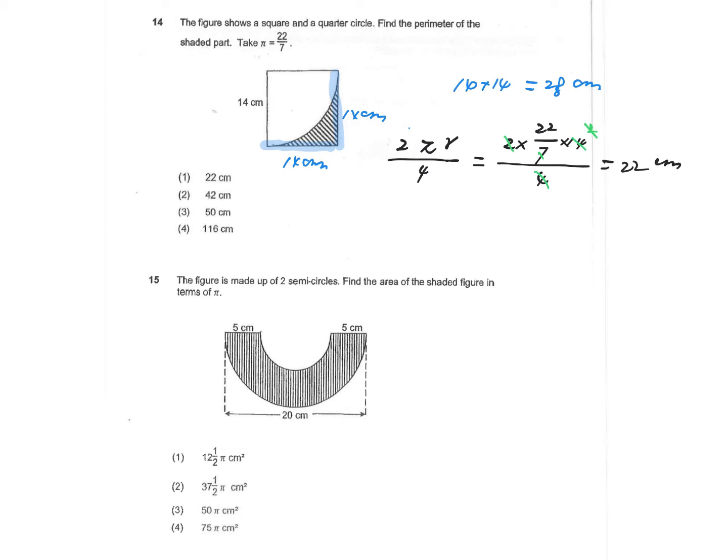So the perimeter for this shaded area, in this case, the final answer is going to be 28 centimeters for the straight lines plus 22 centimeters for the curved lines. In total, we have 50 centimeters. So we choose 3.